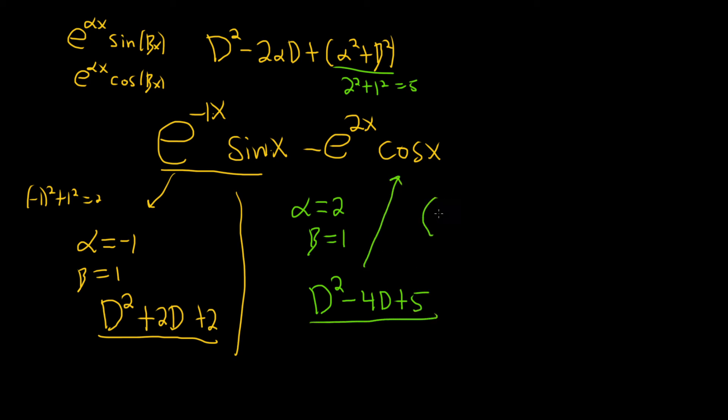So the final answer would be d squared plus 2d plus 2. And then here we would have d squared minus 4d plus 5. And that would be the linear differential operator that annihilates this function.